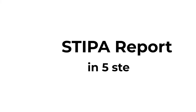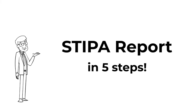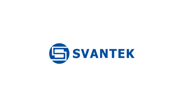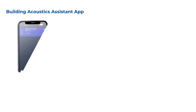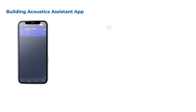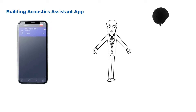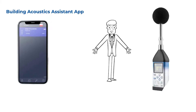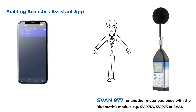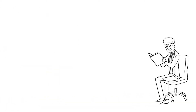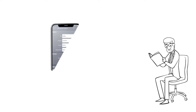Stipper report in five steps. Connect the meter with the Building Acoustics Assistant app. Select the type of measurement and the standard which you want to measure.